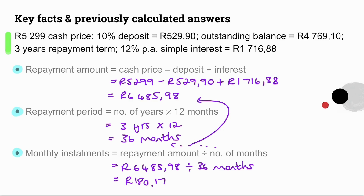So we've answered our question. That is Jan's monthly installment to buy his TV.